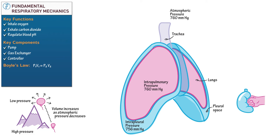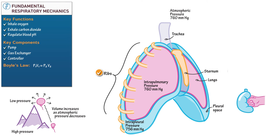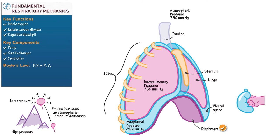Now let's draw the elements of our respiratory pump. Draw a sternum and ribs around the pleural sac. The internal and external intercostal muscles lie between the ribs, but we leave them out for clarity. Draw a diaphragm below the rib cage — a sheet of skeletal muscle that forms the bottom border of the thoracic cavity. Our respiratory pump changes the volume of the thoracic cavity, which alters the intrapulmonary and intrapleural pressures in accordance with Boyle's Law.